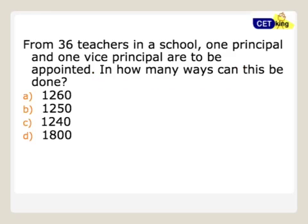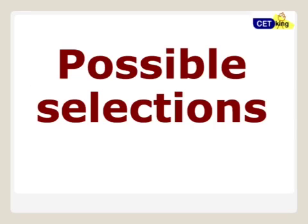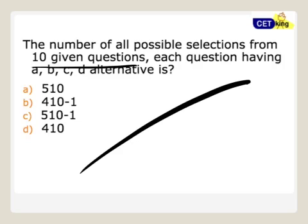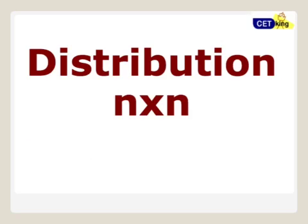Selection based: how many ways from six teachers, 36 teachers in school, how many ways one principal and one vice principal can be appointed - typical question based on selection. Possible selections: there are 10 questions, find the number of possible selections from 10 given questions, each question have A, B, C, D - 4 alternatives.